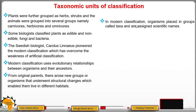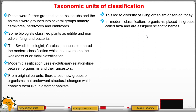In modern classification, organisms are placed in groups called taxa and are assigned scientific names. These structural changes led to the diversity of living organisms — the diversity we observe today.